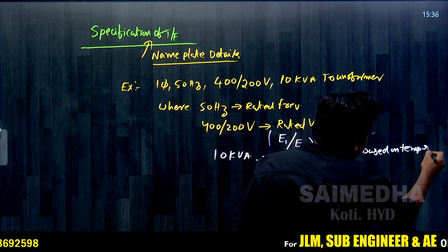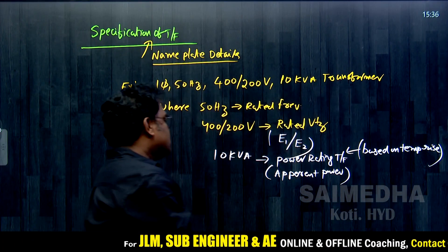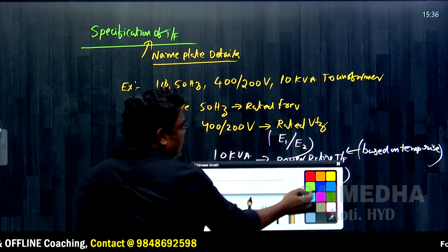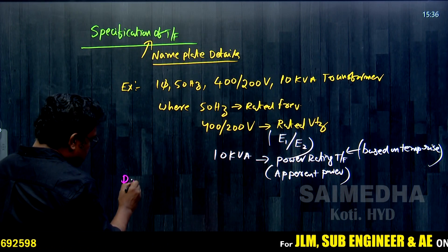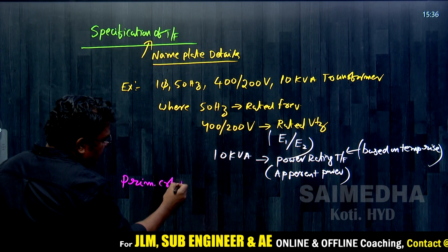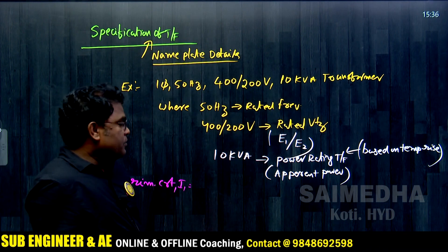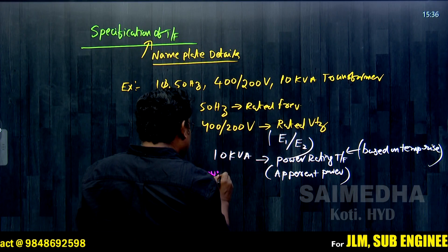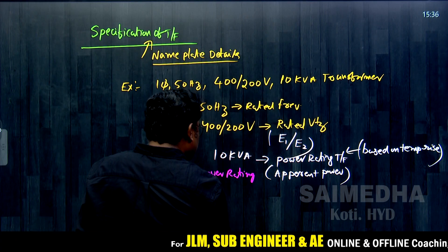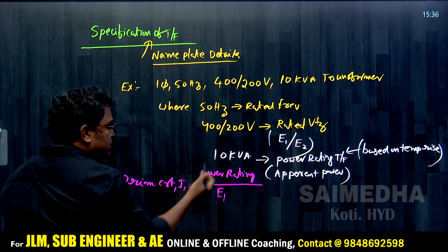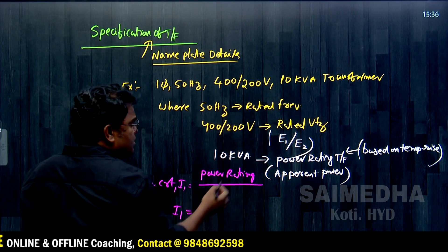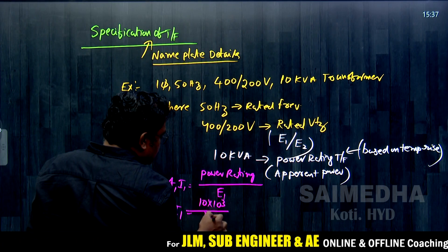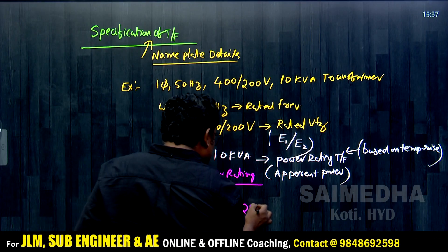Now from this 10 kVA transformer specification, we can find the primary current. The primary current I1 is equal to the power rating divided by the primary voltage: 10 × 10³ divided by 400 volts, which equals 25 amps. So 25 amps of current flows in the primary side.